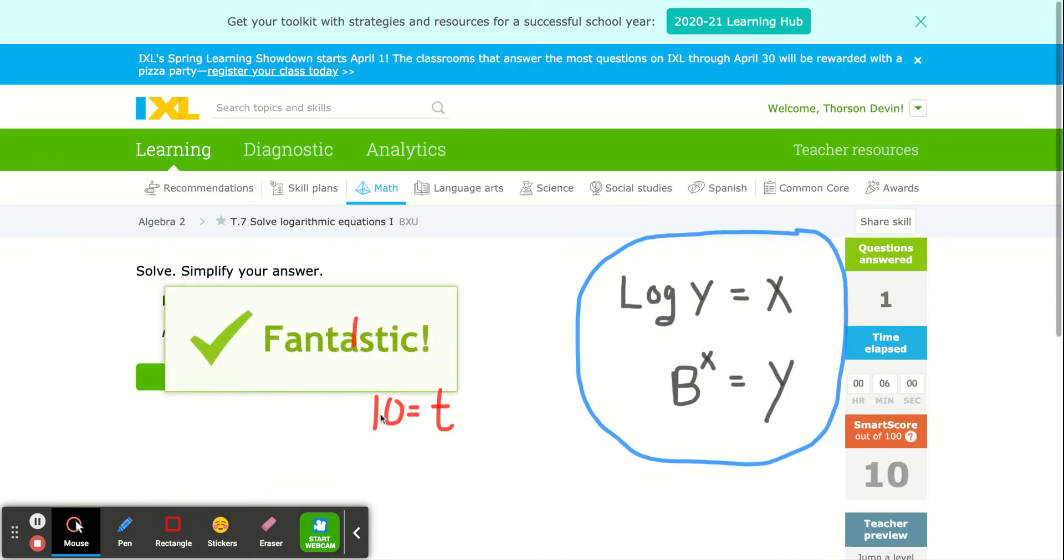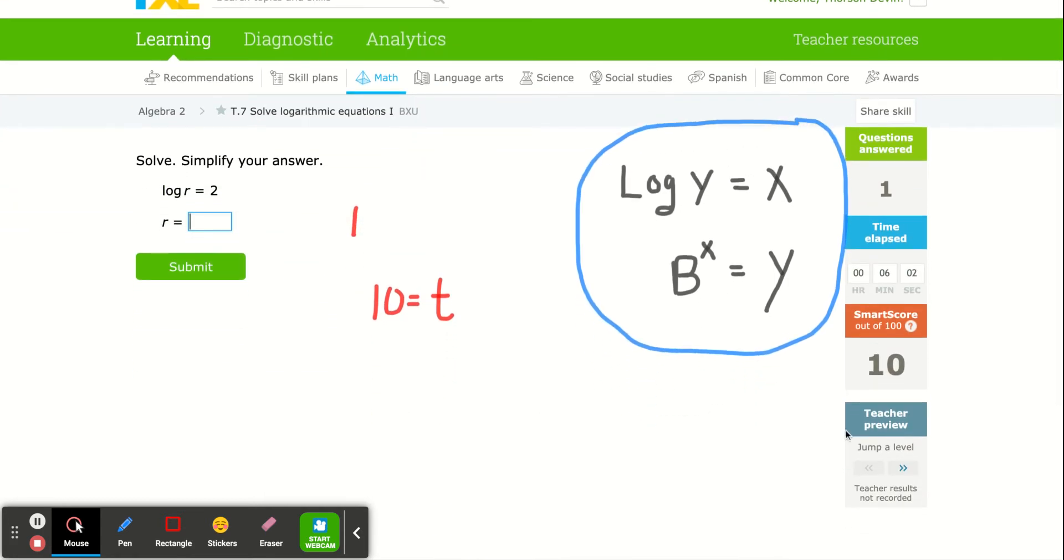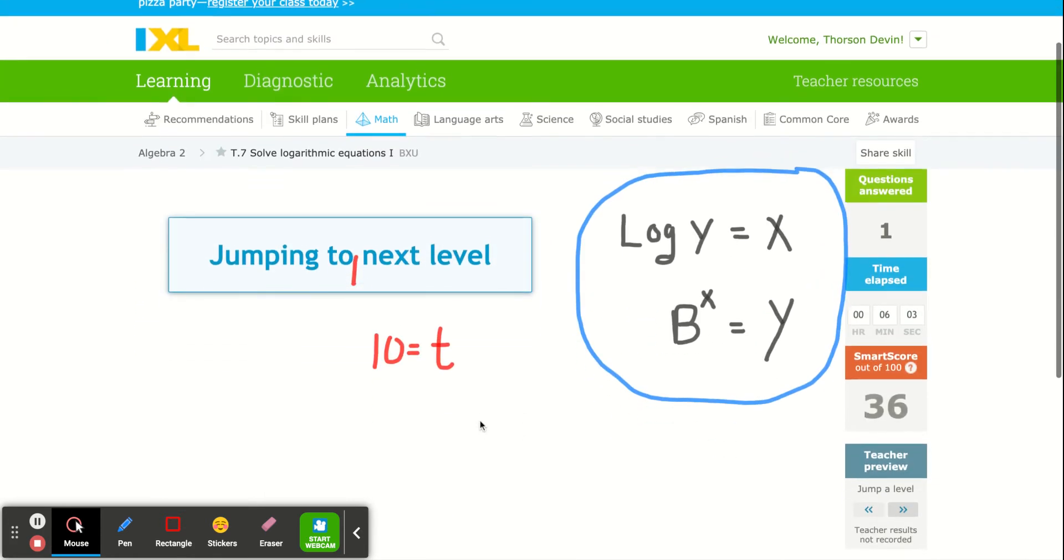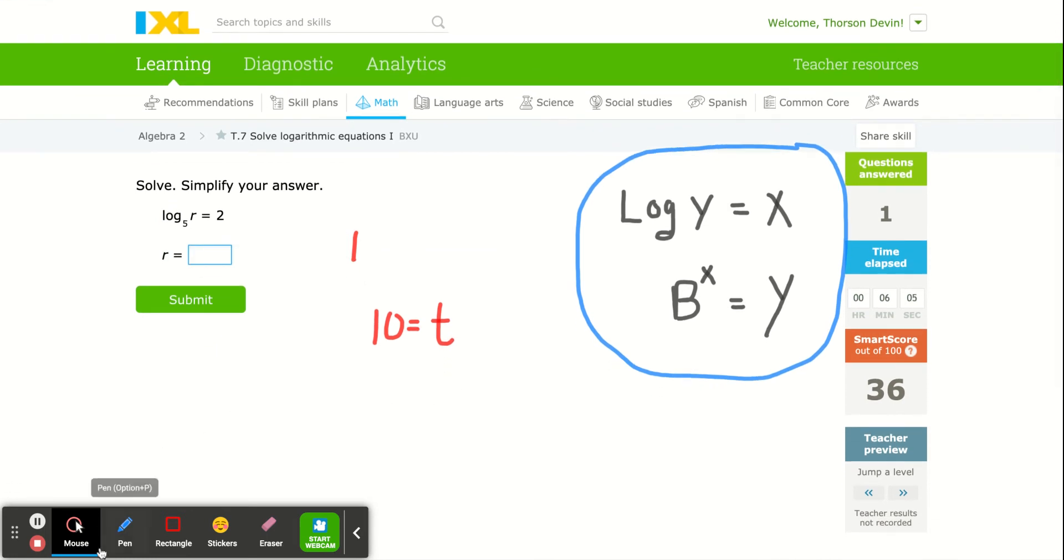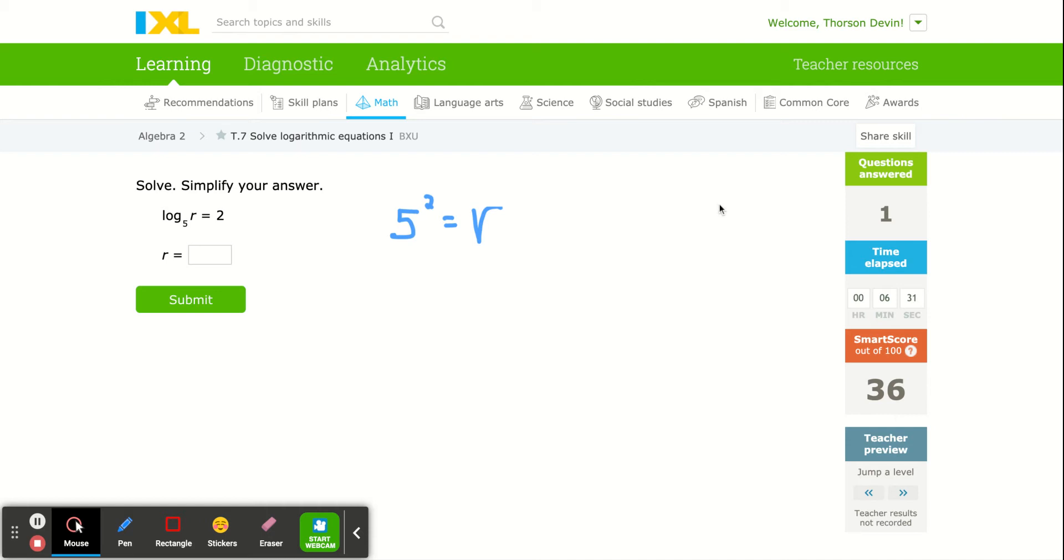All of them are basically this simple. I'm going to jump ahead. This one has a base 5, an exponent of 2 equals r. So r is obviously 25.